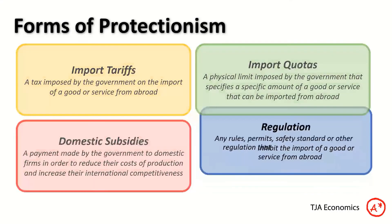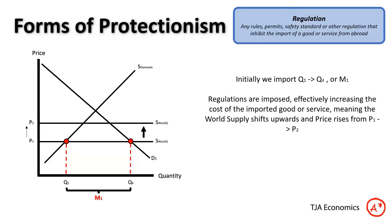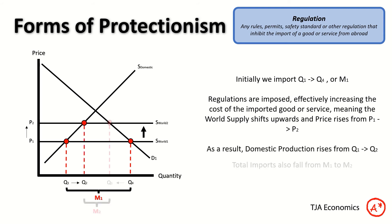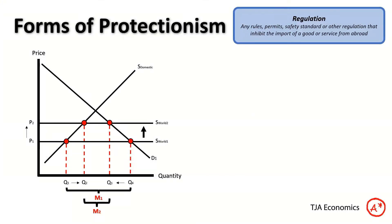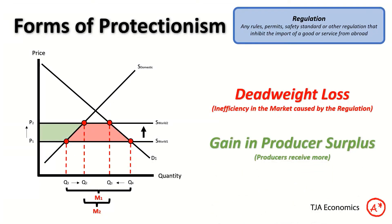Let's look at the last form: regulation — rules, permits, that kind of thing. We start with M1 and push S-world up, because regulation and permits increase the cost to foreign firms from importing here, and therefore their price goes up. We produce more domestically and import less. It looks strikingly similar to a tariff diagram, and it effectively is — the key difference is that whereas with a tariff the cost goes to the government as revenue, here the cost goes to administration, permits, rules, etc. So that entire trapezium is deadweight loss. The government gains no revenue; there's no windfall gain. In green, domestic producers gain surplus, but the labelling of the deadweight loss is what distinguishes it from a tariff diagram.